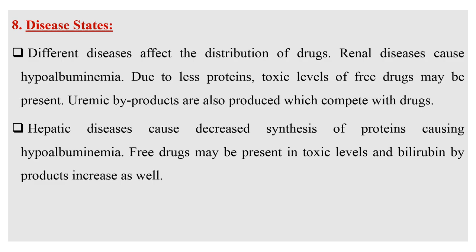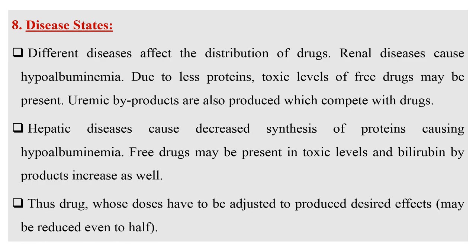The next factor is disease conditions. Different diseases affect the distribution of a drug. Renal diseases cause hypoalbuminuria; due to less proteins, toxic levels of free drugs may be present, and uremic byproducts are also produced which compete with drugs. Hepatic diseases cause decreased synthesis of proteins, also causing hypoalbuminuria. Free drugs may be present at toxic levels and bilirubin byproducts increase as well. Thus, drug doses may need to be adjusted — reduced to even half — to produce the desired effects.